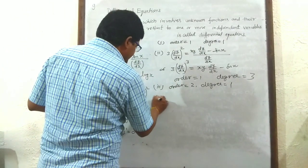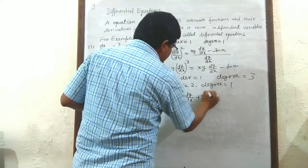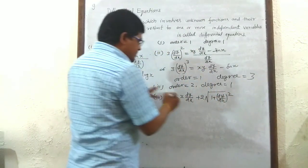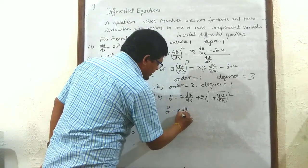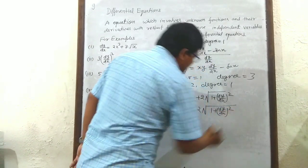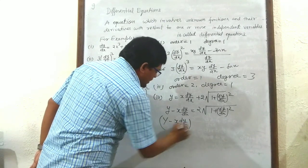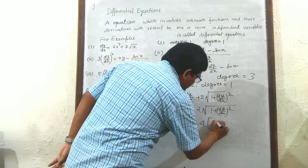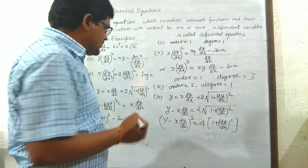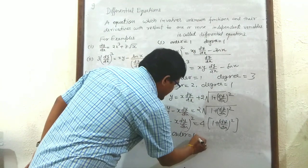Fourth example: y = x(dy/dx) + 2√(1 + (dy/dx)²). Rearranging: y − x(dy/dx) = 2√(1 + (dy/dx)²). Squaring both sides: (y − x·dy/dx)² = 4(1 + (dy/dx)²). All terms contain dy/dx, so order equals 1.